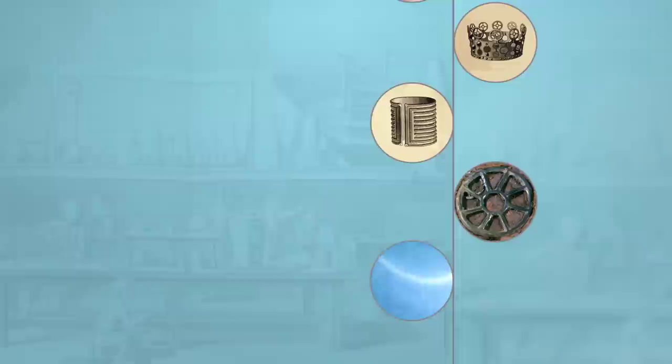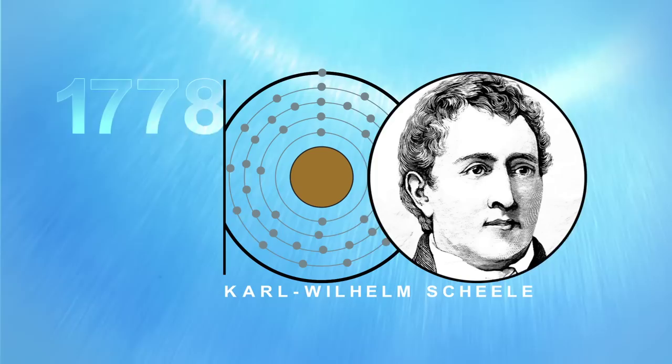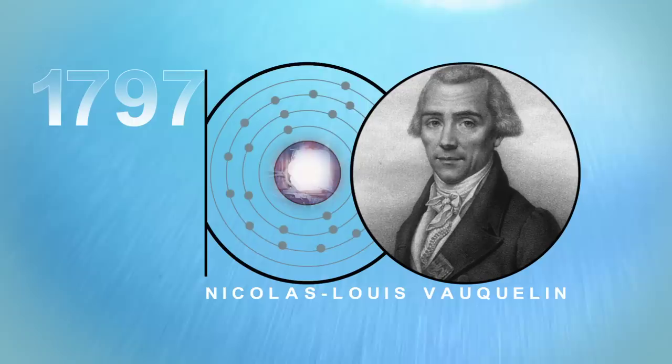For instance, in 1751, Swedish scientist Axel Frederick Cronstedt discovers nickel. In 1778, another Swede, Carl Wilhelm Scheler, discovers molybdenum. And in 1797, in France, Nicolas-Louis Vaucelin identifies a new metal he calls chromium.